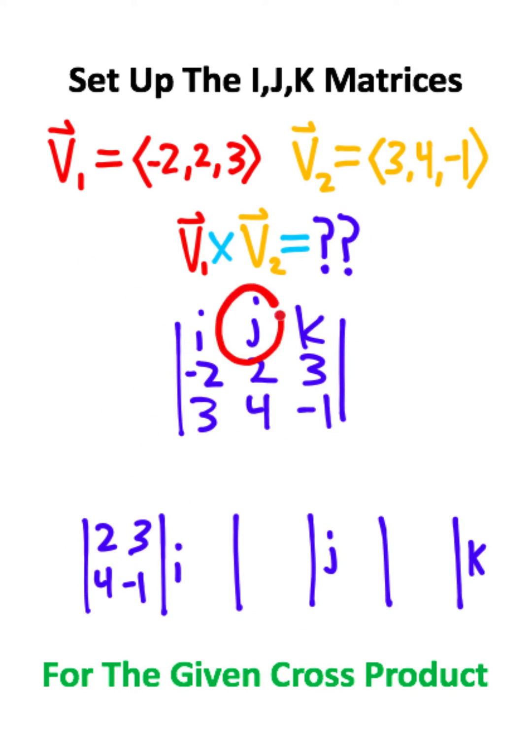For the j matrix, you're going to find your j here, and you're going to cross out the column and cross off the row. So we'll have negative 2, 3, 3, negative 1.